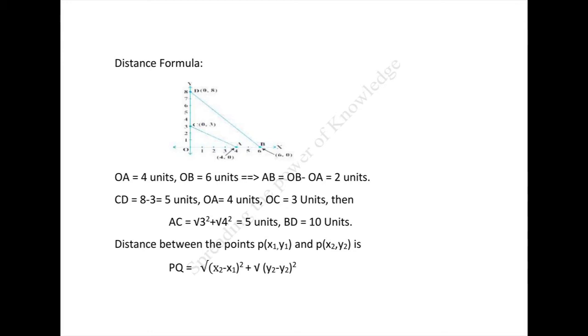Since OA = 4 units and OC = 3 units, then the distance AC = √(3² + 4²) = 5 units. Similarly, the distance BD = 10 units. Therefore, the distance between the points P(x₁, y₁) and Q(x₂, y₂) is PQ = √[(x₂ - x₁)² + (y₂ - y₁)²], which is called the distance formula.